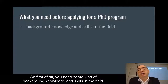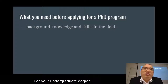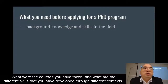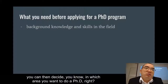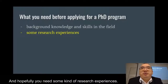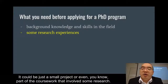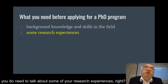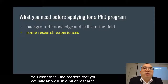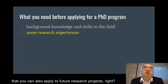First, you need some background knowledge and skills in the field. Review what you have done at university for your undergraduate degree — what courses you have taken and what skills you have developed. Based on the knowledge and skills you have, you can then decide in which area you want to do a PhD. And you hopefully need some kind of research experience — not necessarily many hours in a lab, but even a small project or coursework that involves some research. When you write your personal statement, you need to talk about your research experiences.